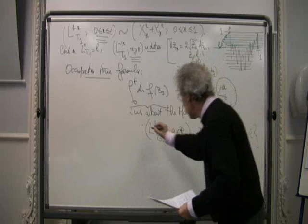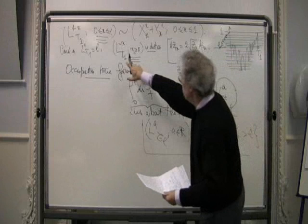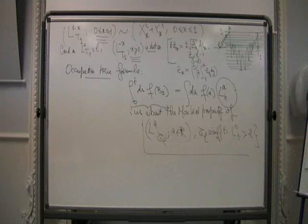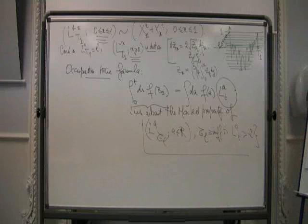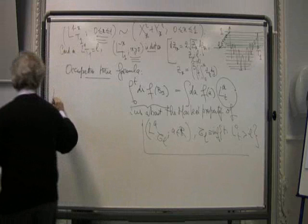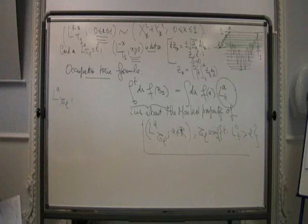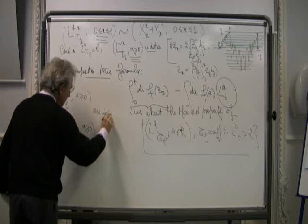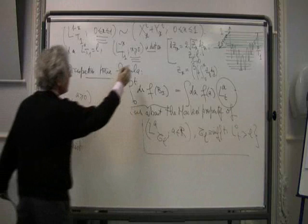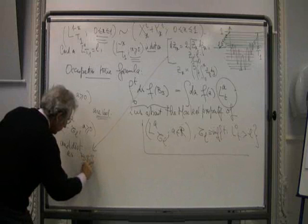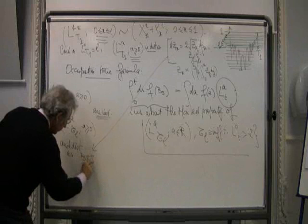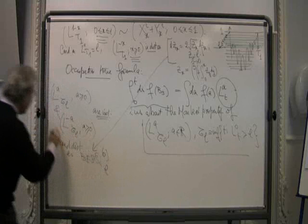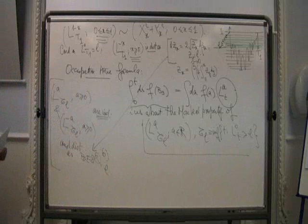I should give you also this result because it is very closely related to this presentation of the local times below level zero. L_A(tau_L), so you fix L and have accumulated little L units of local time at zero. L_A(tau_L) for A ≥ 0, and L_{-A}(tau_L) for A ≥ 0, are independent and distributed exactly in the same way — as BESQ(0) starting at little L.